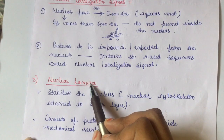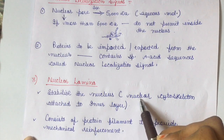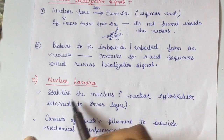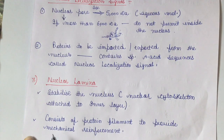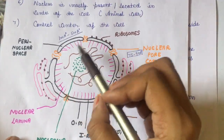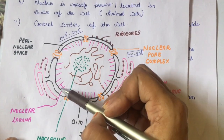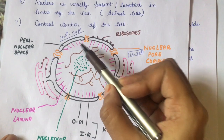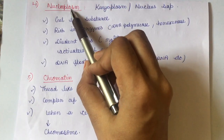Nuclear lamina stabilizes the nucleus — it is also called the nuclear cytoskeleton. It is attached to the inner layer of the nuclear membrane and consists of protein filaments that provide mechanical reinforcement to the nucleus.